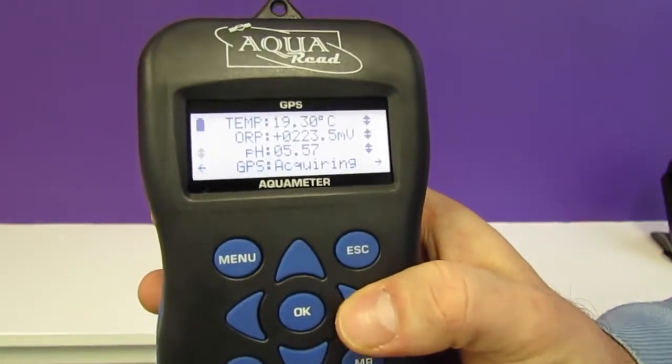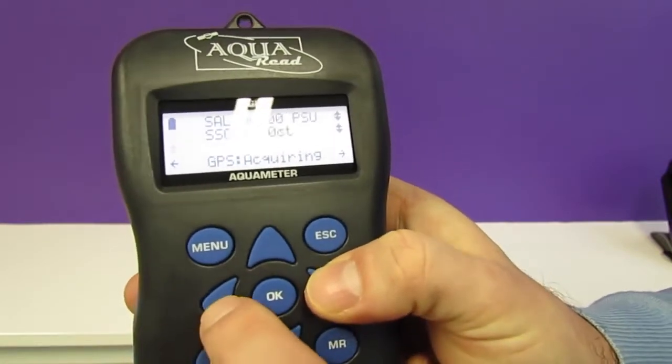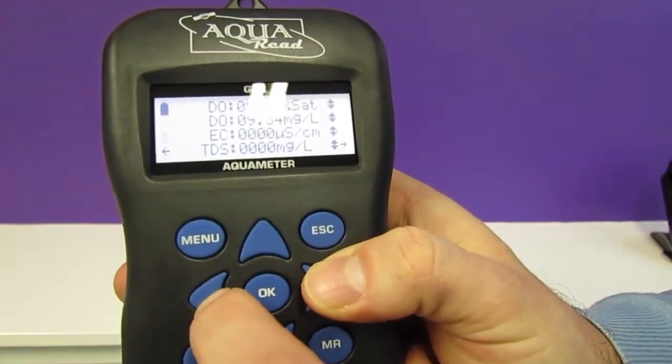You can scroll across on the screen using the left and right buttons to display all of the parameters that are currently being measured.